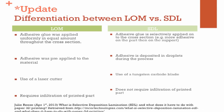The first difference is that in the LOM process, adhesive glue is applied uniformly in equal amounts throughout the cross-section. However, for Selective Deposition Lamination, adhesive glue is selectively applied on the cross-section. For example, more adhesive is placed on the part than on the support material, which improves the removal of the part after the print.